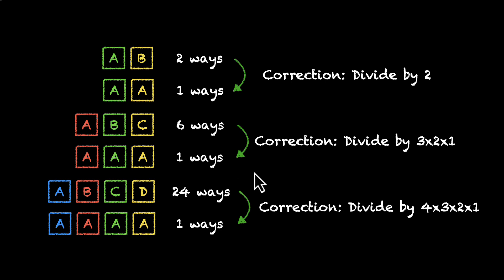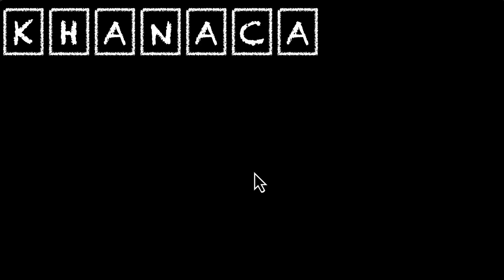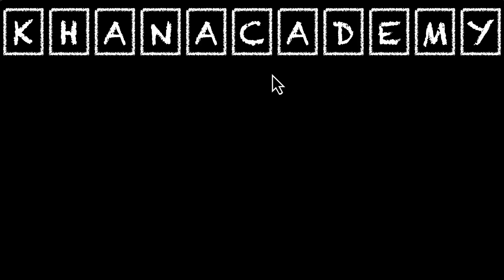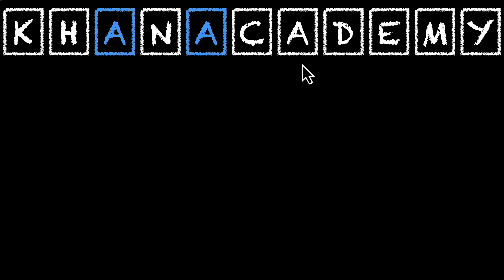Our first word is K-H-A-N-A-C-A-D-E-M-Y — Khan Academy. How many unique words can we form by rearranging the letters of Khan Academy? Let's see how many letters are repeating. K, H, N, C, D, E, M, Y — all unique. A repeats: we have three A's. So A is the only letter we need to take care of.